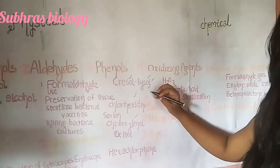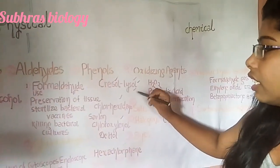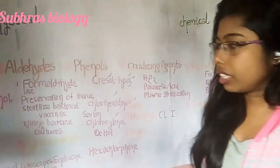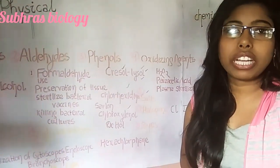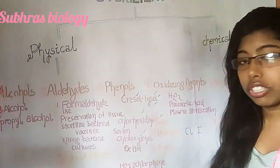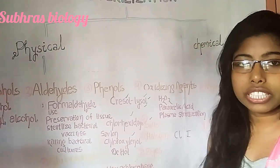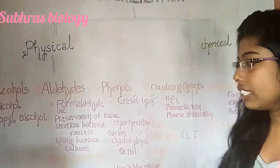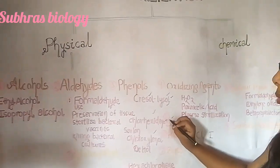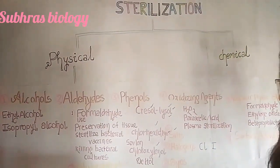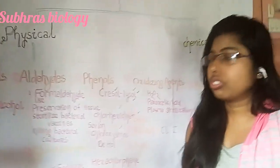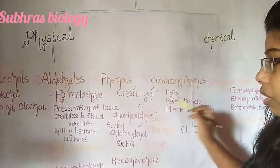Lysol is also used as a bladder irrigant. Next is chlorhexidine. The commercially available Savlon that you get from the market is a mixture of chlorhexidine and cetrimide. This chlorhexidine, when mixed with cetrimide, forms Savlon, which is mainly used for treating wounds.